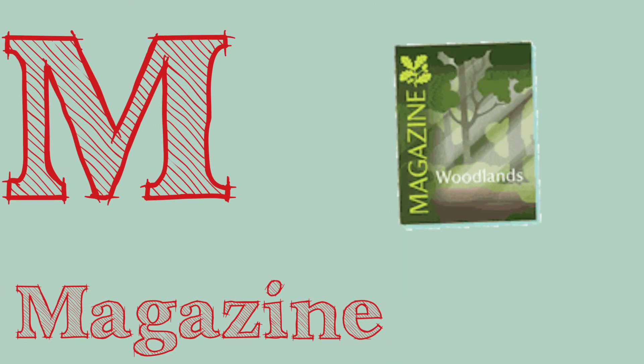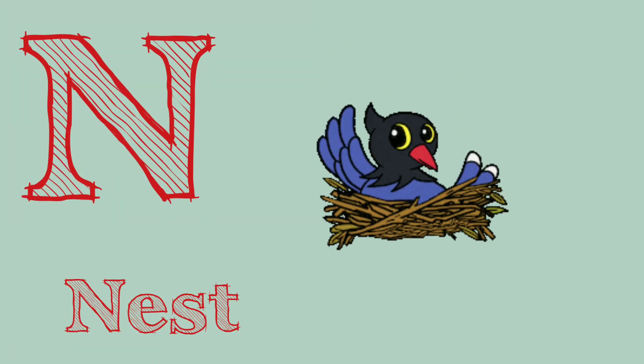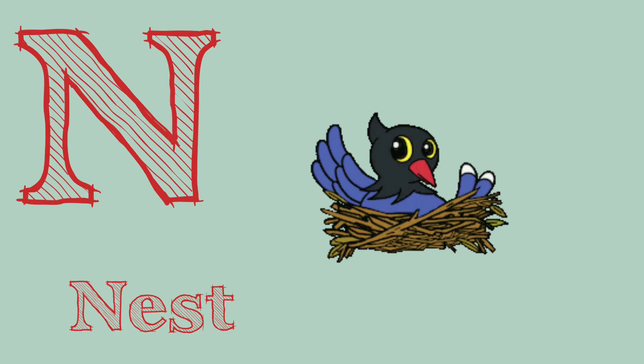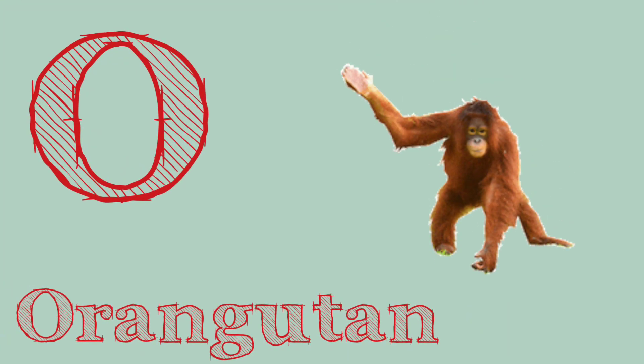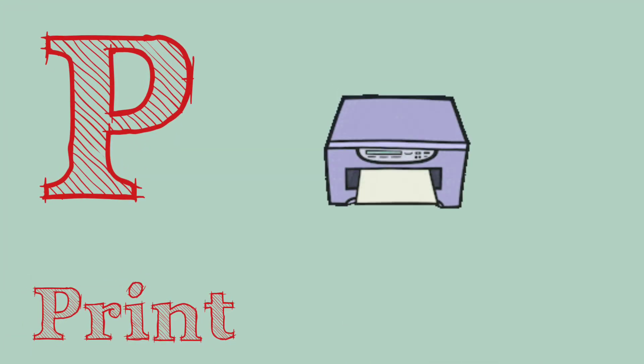M. M is for magazine. N. N is for nest. O. O is for orangutan. P. P is for print.